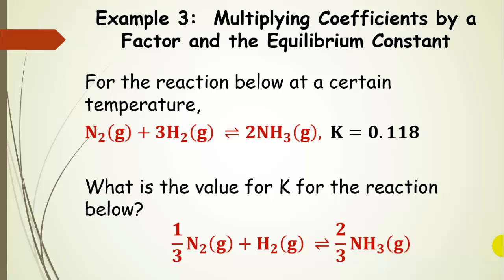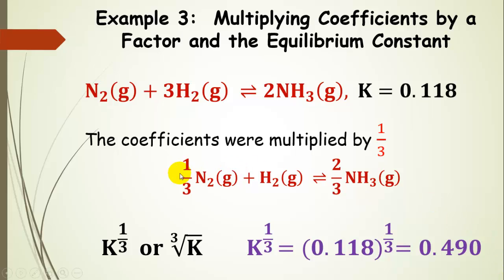Let's go back to the ammonia reaction and multiply each coefficient by a factor. Each of the coefficients was multiplied by one third — equivalently, dividing by 3. So our new equilibrium constant is the original equilibrium constant raised to the one-third power, giving a new value of 0.490.